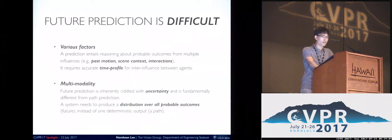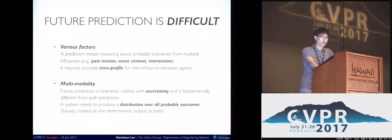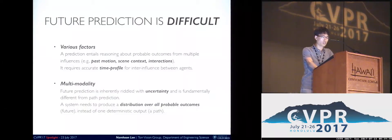However, accurate future prediction is difficult to accomplish. First of all, there are various factors that could affect an agent's future. In this work, we consider multiple factors such as agents' past motion, scene context, as well as interactions among agents. Secondly, it is because of the multimodal nature of the future prediction task. Future prediction is inherently riddled with uncertainty and is fundamentally different from path prediction. To be more specific, there could be different modes of future given the same underlying situation. Therefore, a system should attempt to produce a distribution over all probable outcomes.